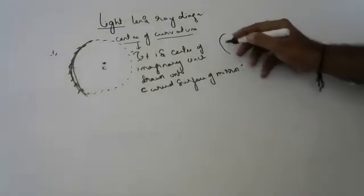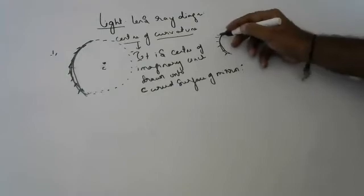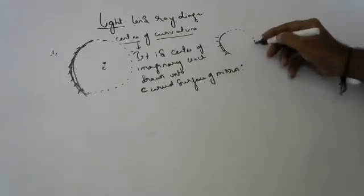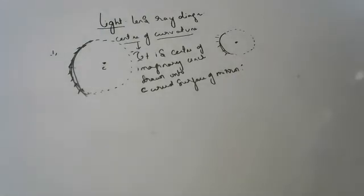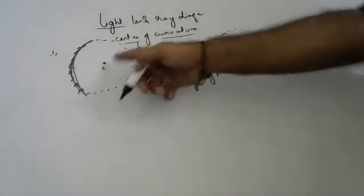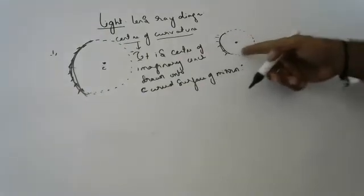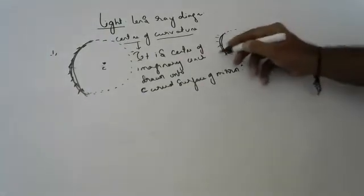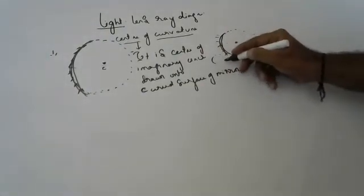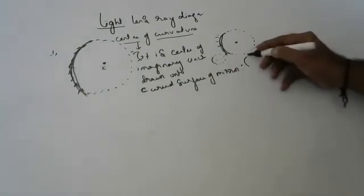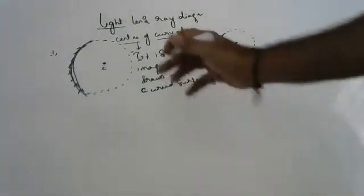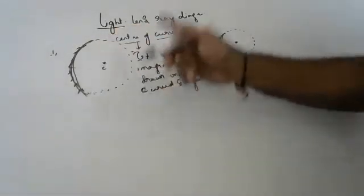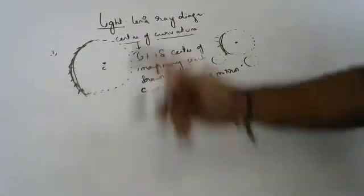This is a mirror. If I complete it like a circle, it will have one center — that center is called center of curvature. So the center of curvature is the center of the imaginary circle drawn onto the curved surface of the mirror.